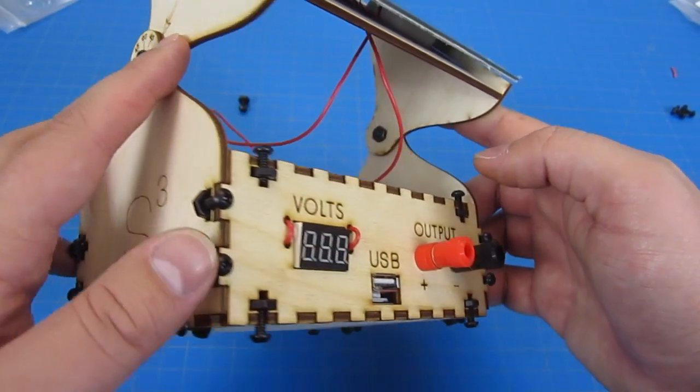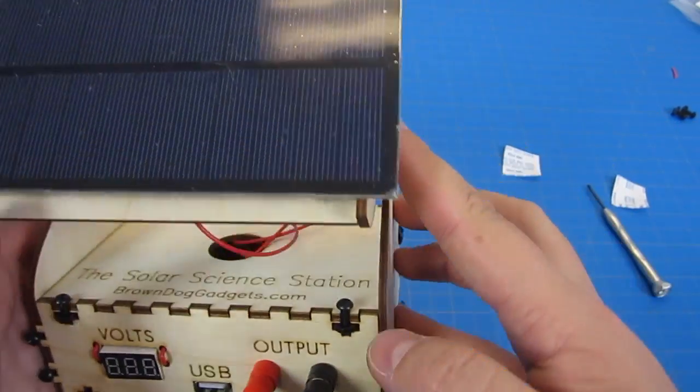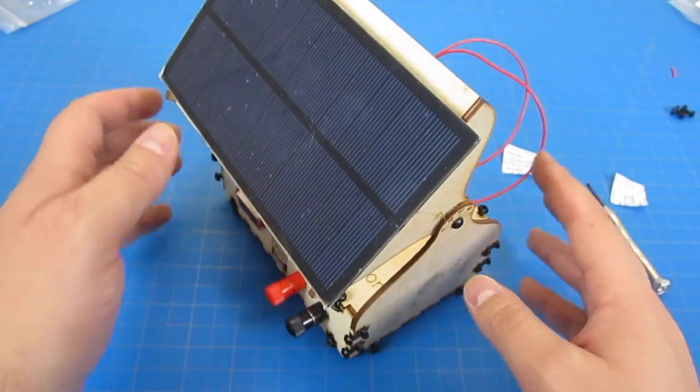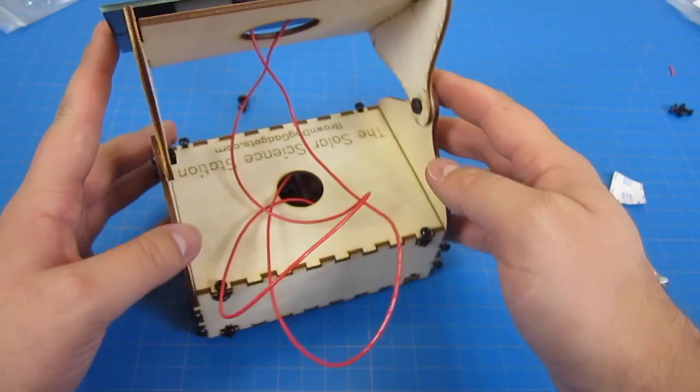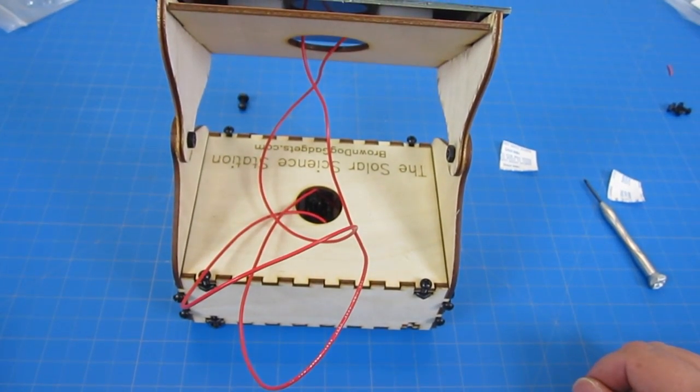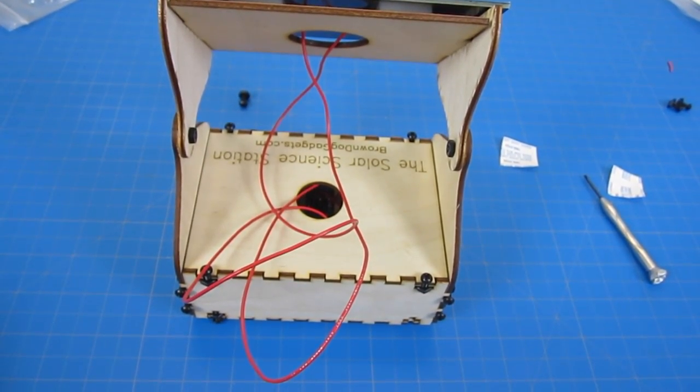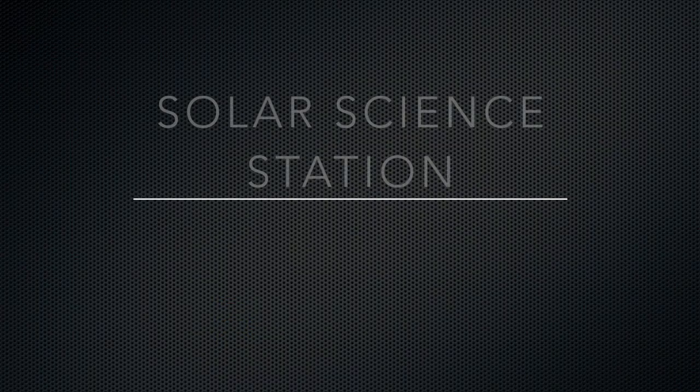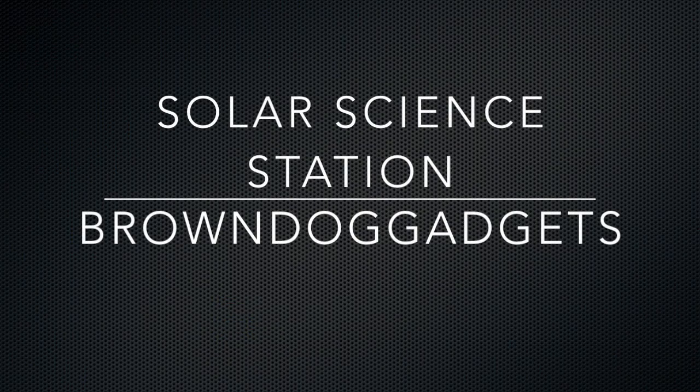For detailed written instructions, check us out on browndoggadgets.com or on instructables.com. We hope the solar science station was an easy build for you and that you can now use it outside and have tons of fun with it. For any questions, please give us a shout out at browndoggadgets.com or our Facebook page. Thanks for watching and happy building!